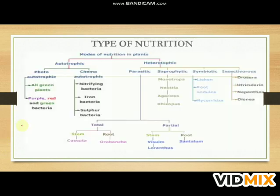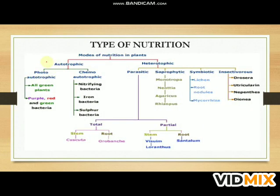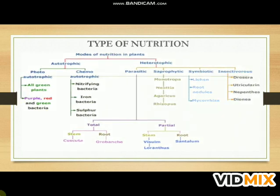There are two types of nutrition: autotrophic nutrition and heterotrophic nutrition. Autotrophic nutrition is further divided into two types — photo-autotrophic and chemo-autotrophic. Heterotrophic nutrition is of four types — parasitic, saprophytic, symbiotic, and insectivorous. We will read about each of them later on.